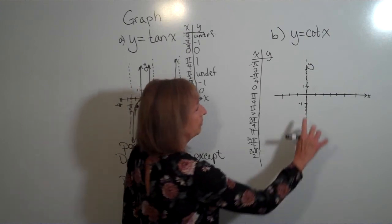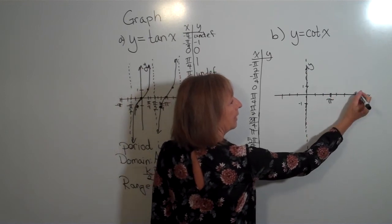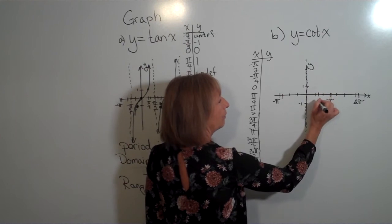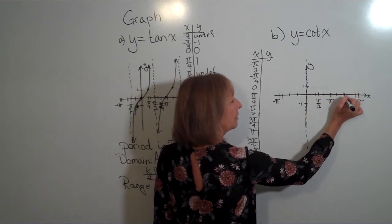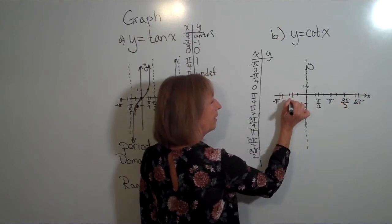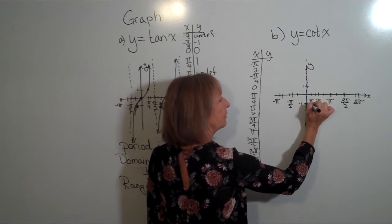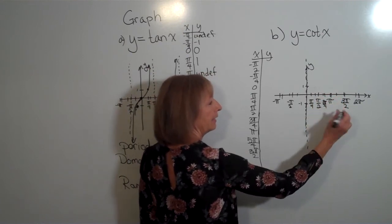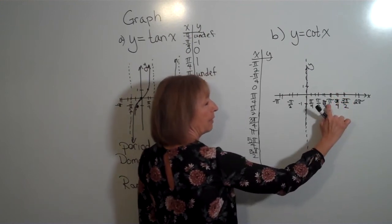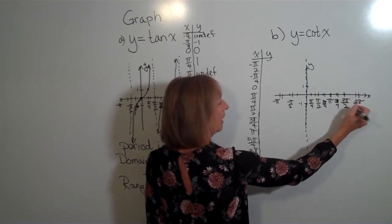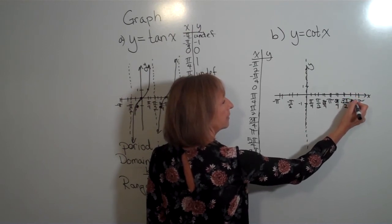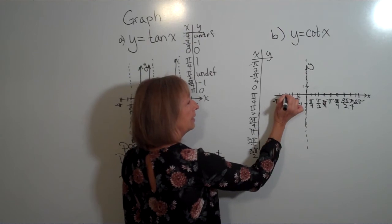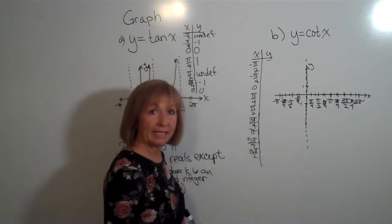Now that we have our angles, let's mark them on the coordinate plane. Pi is just a little past 3, 2 pi is a little past 6, and negative pi is a little to the left of negative 3. Halfway values give us pi over 2, 3 pi over 2, and negative pi over 2. Pi over 4 is halfway between 0 and pi over 2; 3 pi over 4 halfway between pi over 2 and pi; 5 pi over 4 halfway between pi and 3 pi over 2; and 7 pi over 4 halfway between 3 pi over 2 and 2 pi. We also have negative pi over 4 and negative 3 pi over 4.